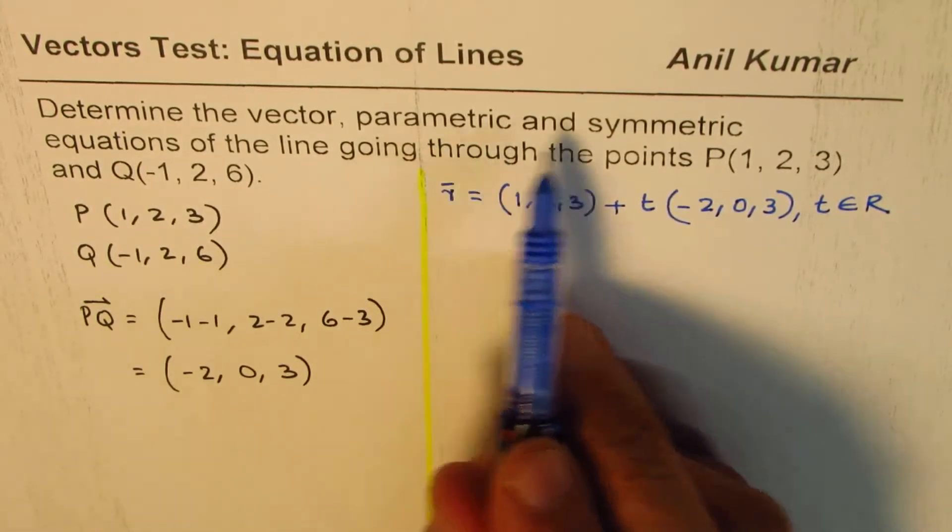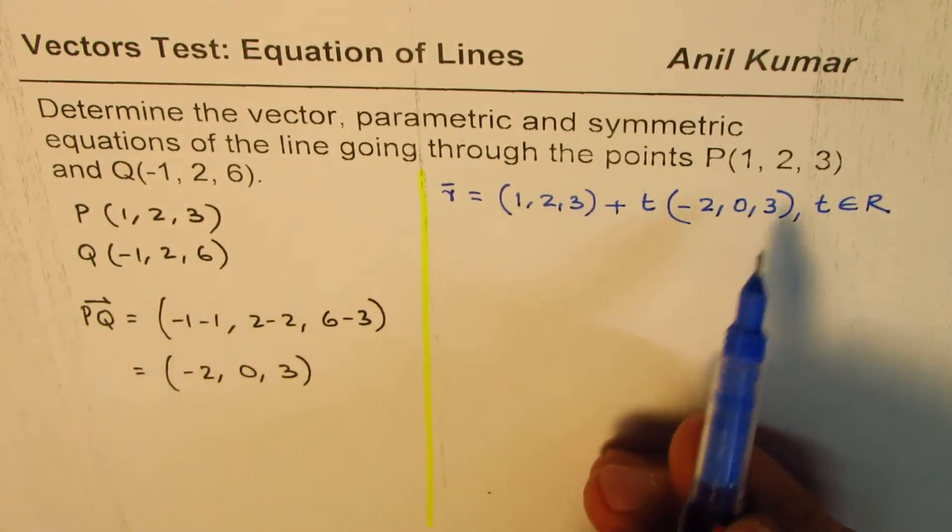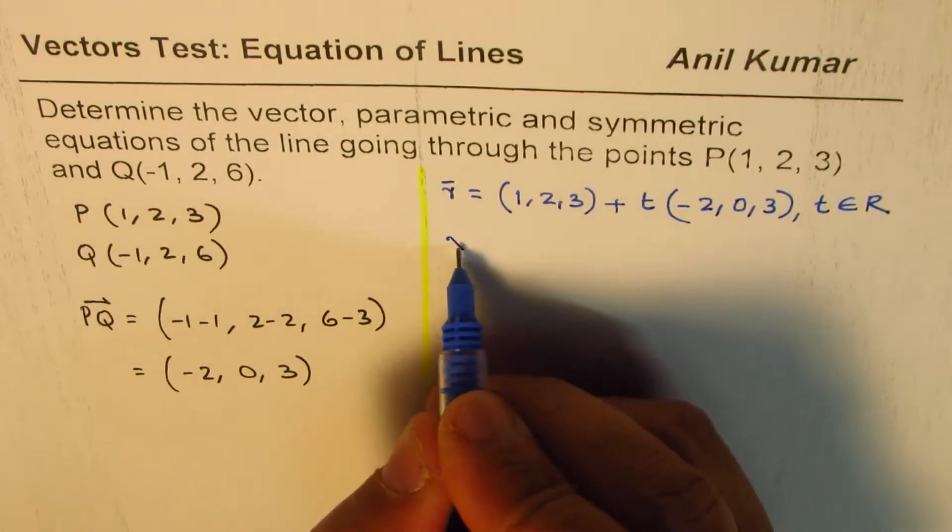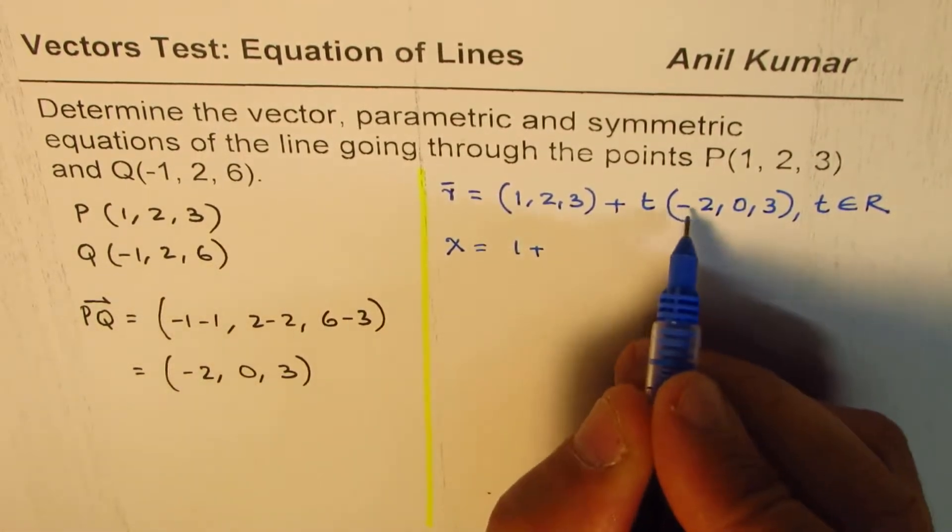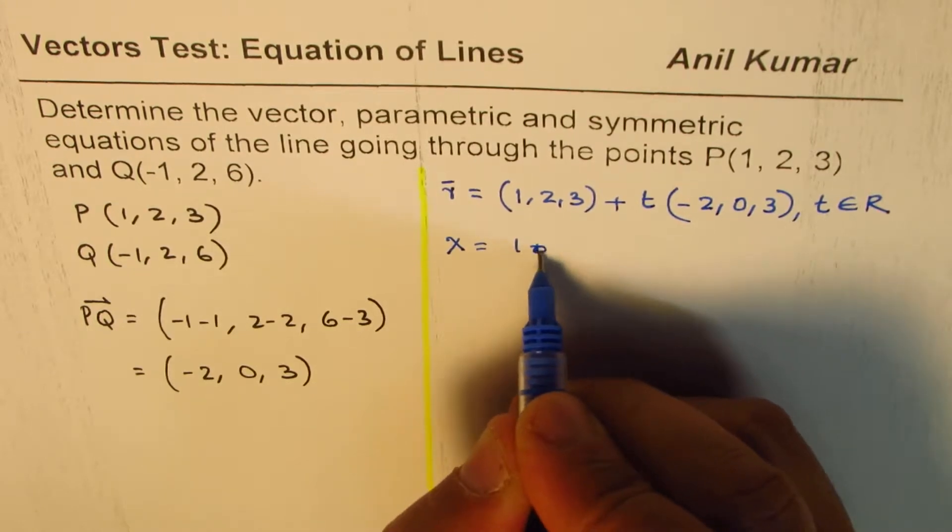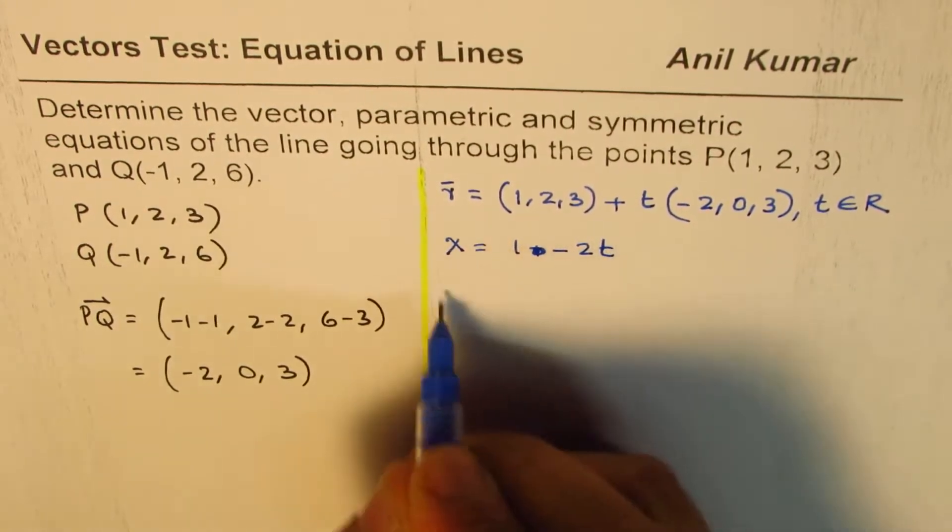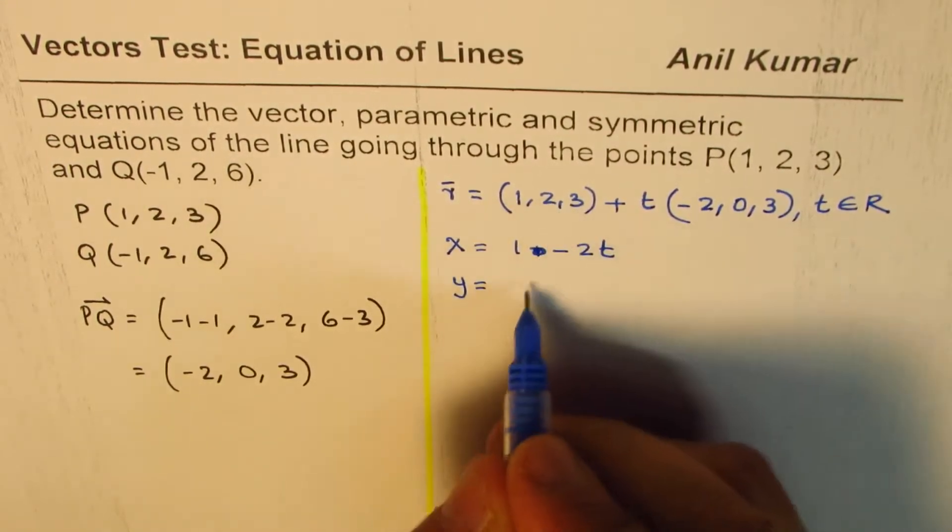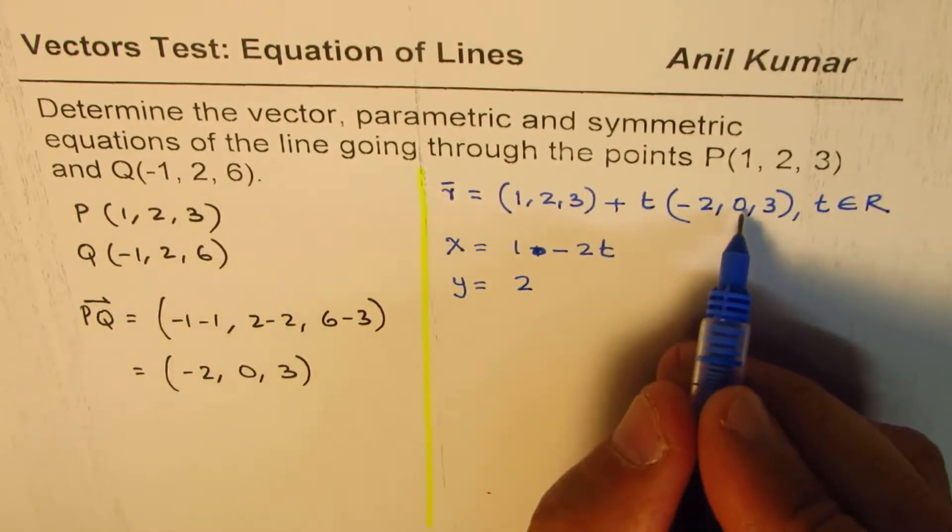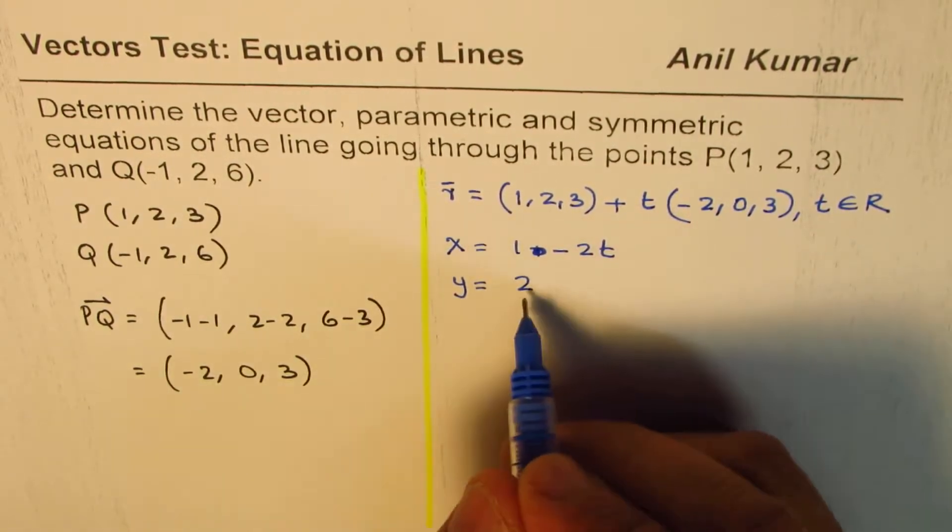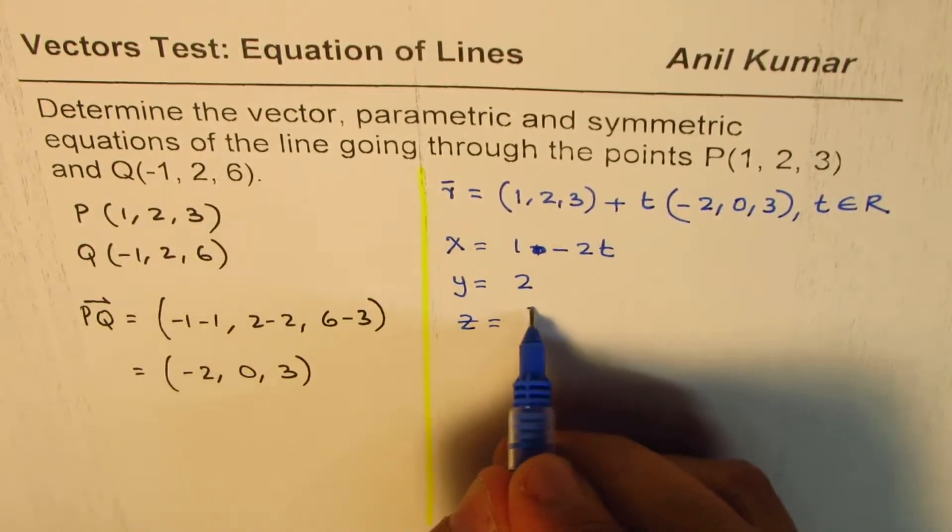Now, to write the parametric equation, we just need to rearrange it. So x component here equals 1 plus -2t. So let me write this as -2t. Y component is 2.